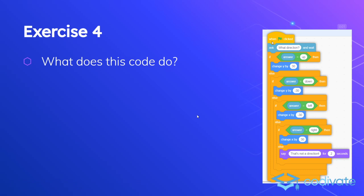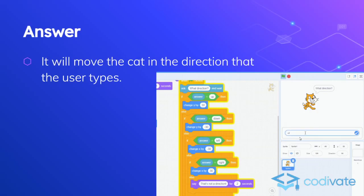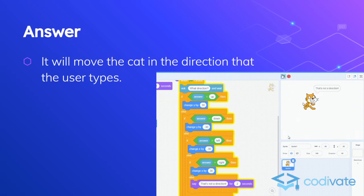Now, a different way: instead of figuring out what the code is, you're figuring out what the code does. We have 'ask direction and wait.' If the answer is 'up,' change y by 30. If the answer is 'down,' change y by negative 30. Notice this is an if, and everything else is nested in the else — so really this picks one of the options. They ask for a direction: type 'up,' the cat moves up; type 'down,' it moves down; type 'left,' it moves left; type 'right,' it moves right. Type something else, the cat says 'that's not a direction.' You can actually make controls for your cat by typing.